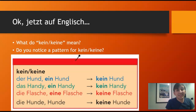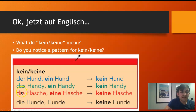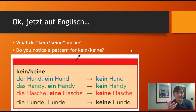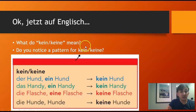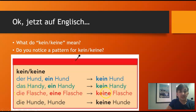A way to remember when to put an e on — at least when it's the subject — think about it this way: if it's die, it gets an e. If it's das or der, you put nothing at the end. So if the word is ein and you have a masculine or neuter noun — das or der — you put nothing at the end. But if it's die — so if it's feminine or plural — it gets an e.